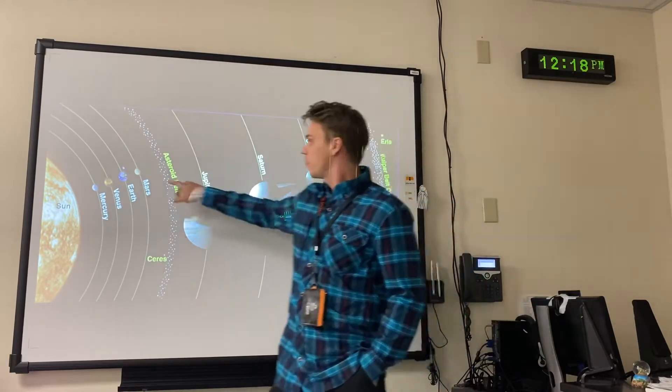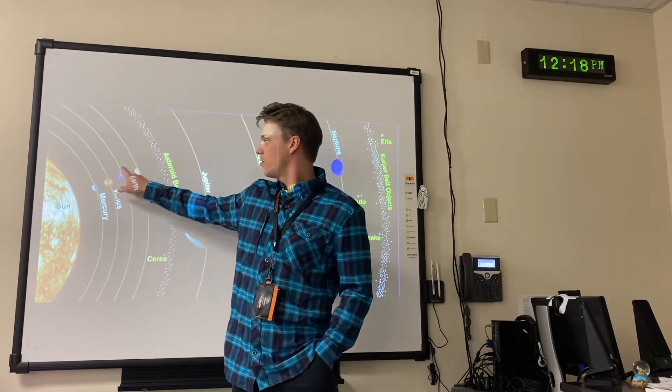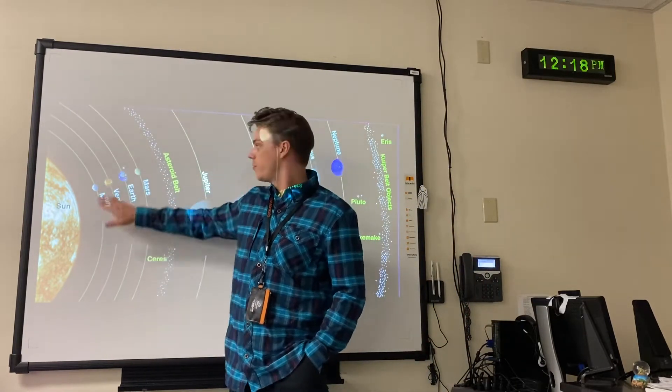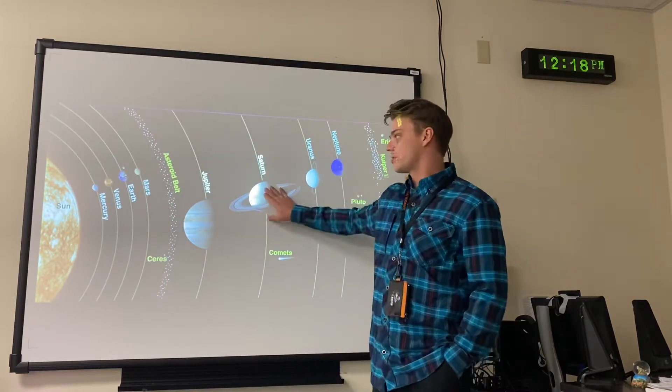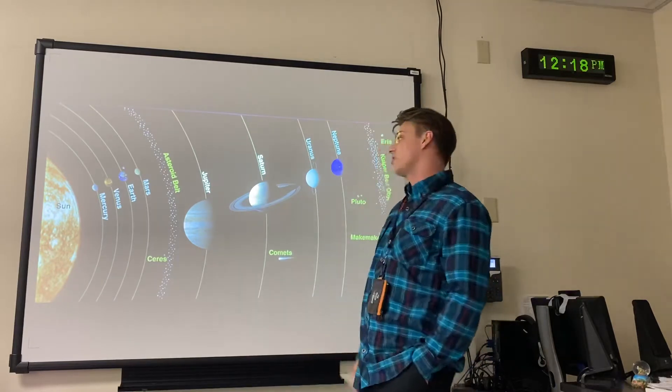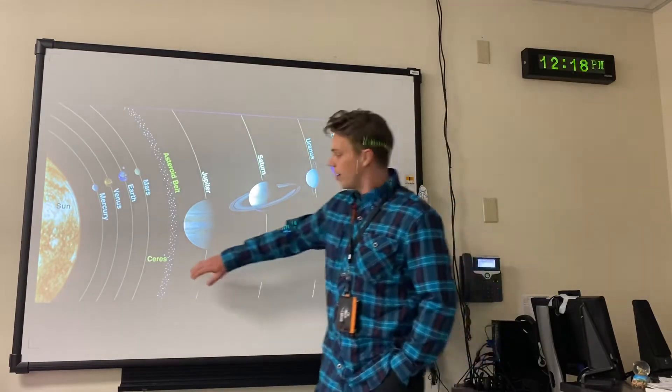We've got planets, right? We've got some moons. So the first two planets don't have moons, but every other planet after it does have moons, and Saturn has a ton. Jupiter has a ton of moons. But there's also asteroids,